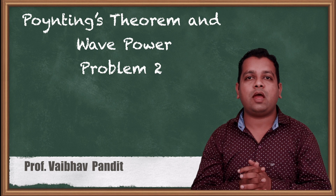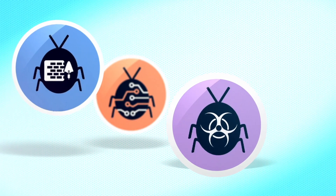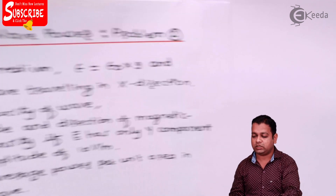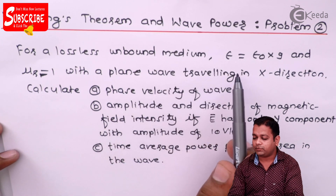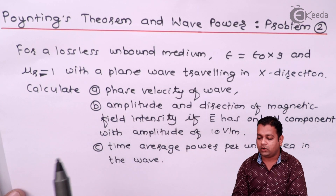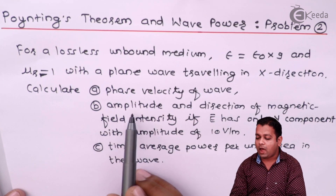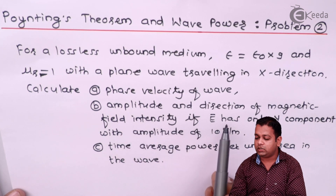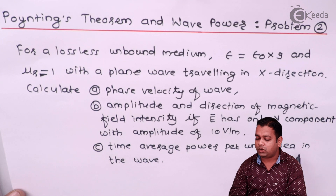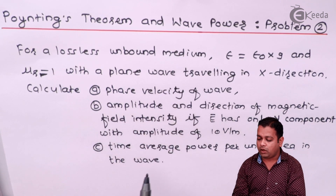Based on the Poynting theorem and wave power, in the previous video we solved one problem. Let us take one more problem. The problem statement: for a lossless unbound medium, epsilon equal to epsilon_0 times 9, and mu_r equal to 1, with a plane wave traveling in the X direction, calculate three parts: Part A — the phase velocity of the wave; Part B — amplitude and direction of magnetic field intensity if E has only a Y component with amplitude 10 volts per meter; Part C — the time average power per unit area in the wave.